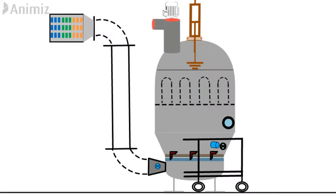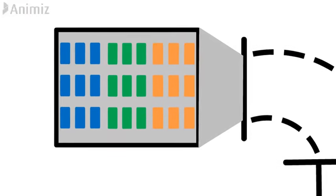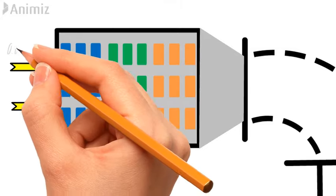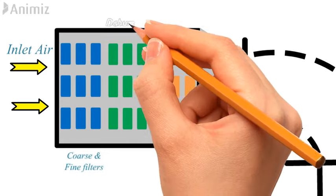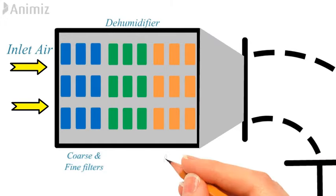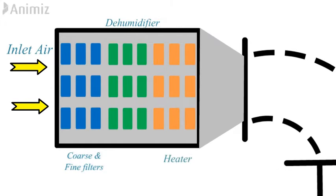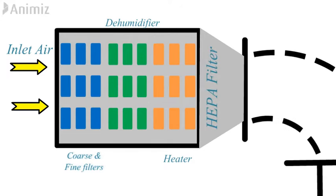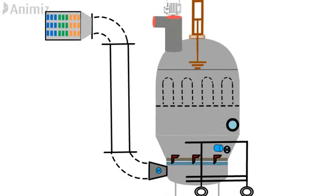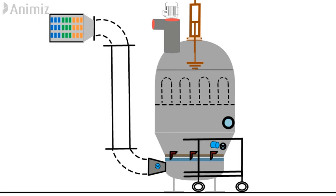This is a simple representation of a fluidized bed dryer with all its accessories and parts. First, let's see the various parts of the air processing unit. There is an inlet for air to enter, then coarse and fine filters for filtering the air. There is a dehumidifier which reduces the moisture content of the inlet air, then a heater for heating the air to the required temperature. Finally, there are HEPA filters — high efficiency particulate air filters — which completely filter the air entering into the fluidized bed dryer.